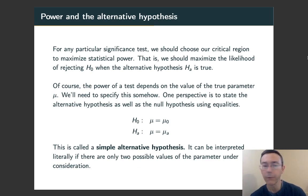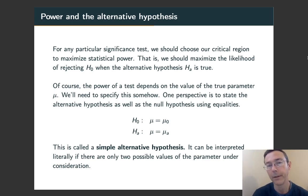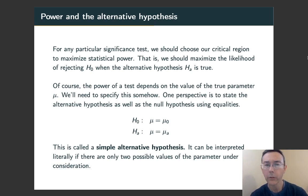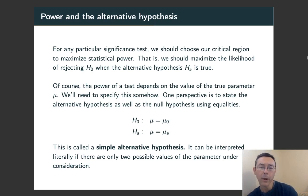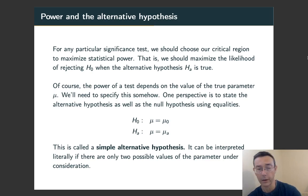Here I've got them both written as equalities, whereas in the past the alternative hypothesis would have been written as some sort of inequality. You can think about this as: there's some unknown distribution with a parameter mu, and that parameter mu can only have two values — two values that we're interested in and trying to distinguish between.